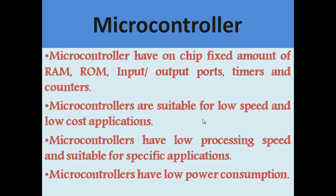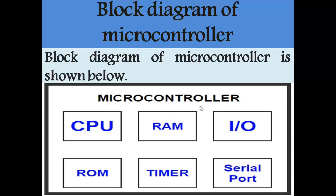Microcontrollers are only suitable for low-speed and low-cost applications. Microcontrollers have lower speed than microprocessors, and their processing speed depends on the external oscillator connected to them. You can visit my blog microcontrollerslab.com to learn more about processing speed and crystal oscillators. As you can see in this block diagram, a microcontroller has inside it a CPU, RAM, ROM, input/output port, timer, and serial port — so it is a ready-to-use microcomputer.